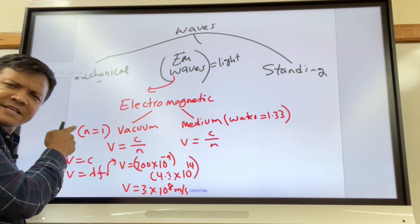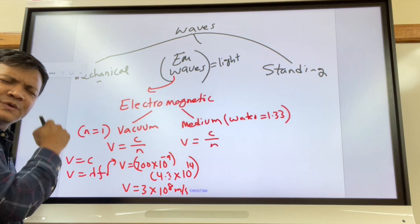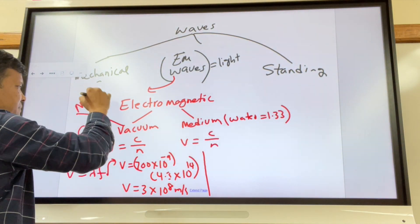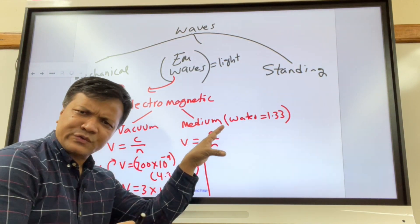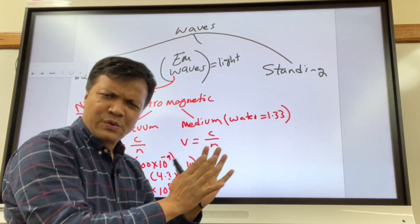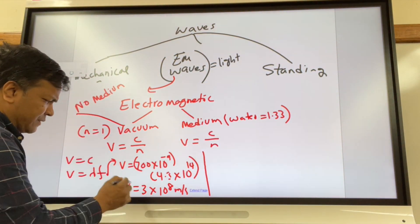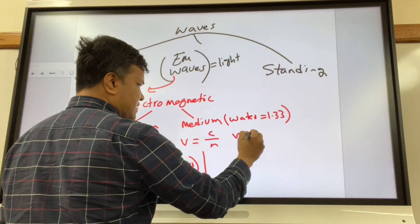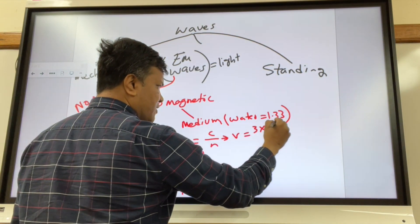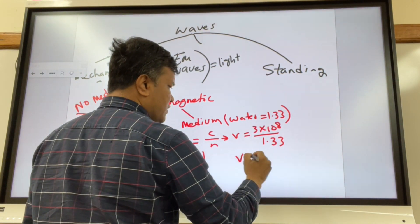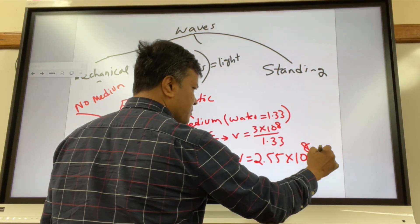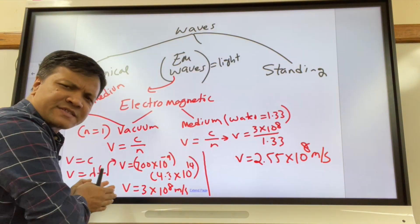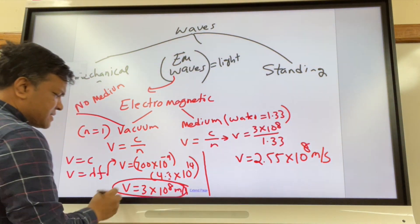Light moves at 3 × 10⁸ m/s in vacuum, or even in air since N for air is 1.0003, very close to 1. When light goes through water, it has a medium and will slow down. With N equal to 1.33, V equals 3 × 10⁸ divided by 1.33, giving V equal to 2.55 × 10⁸ meters per second — slower than in vacuum. The speed of light in vacuum has the special notation C.